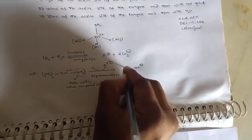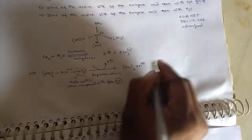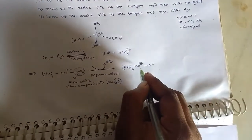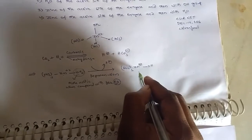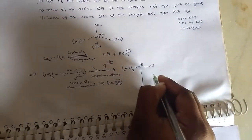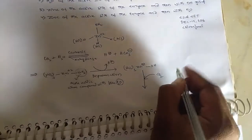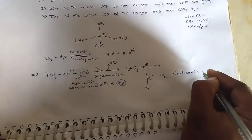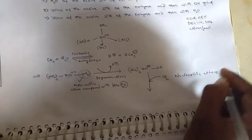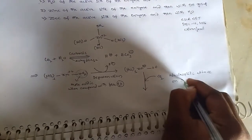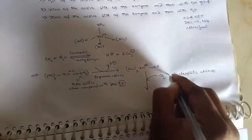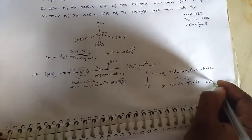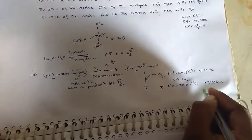Then, the formation of zinc hydroxide takes place, forming a complex. On addition of carbon dioxide, a nucleophilic attack on carbon dioxide takes place — this is a nucleophilic addition reaction.